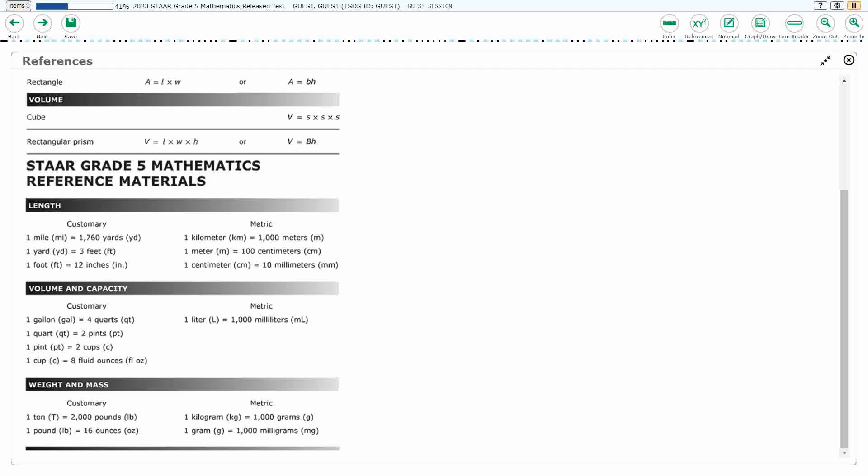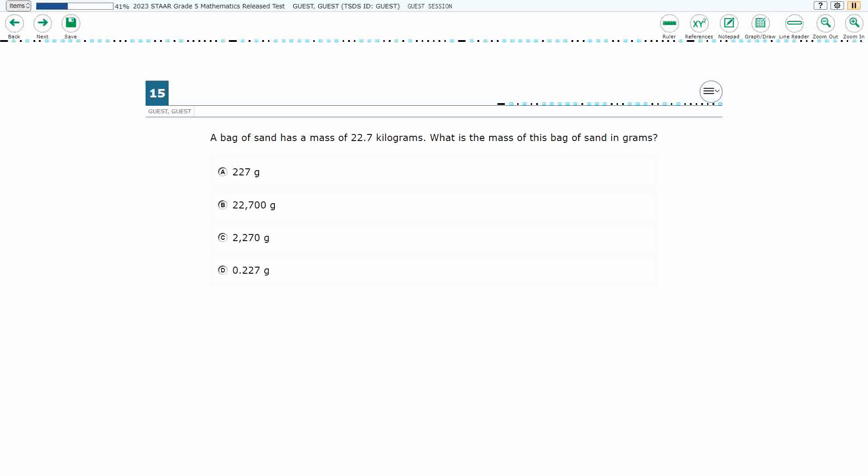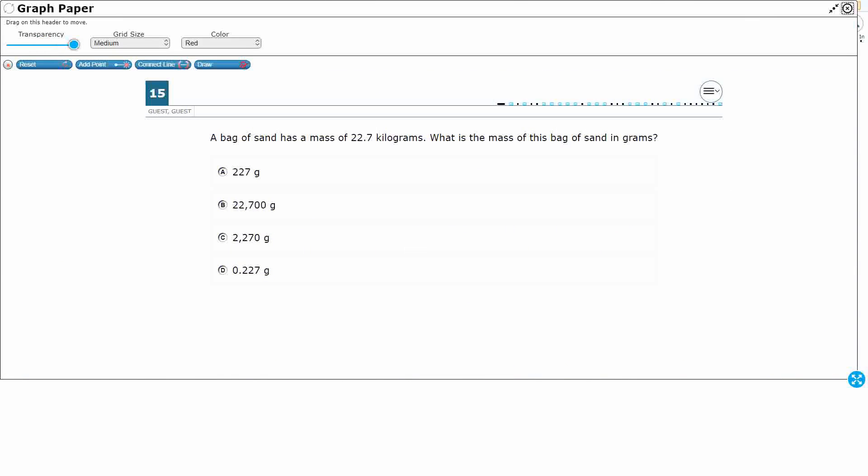We've got 1 gram equals 1,000 milligrams. We're not looking at that one. We're looking at that second to last one. 1 kilogram equals 1,000 grams. That's the one we're looking at right there. So that's going to be our unit conversion that we need here.